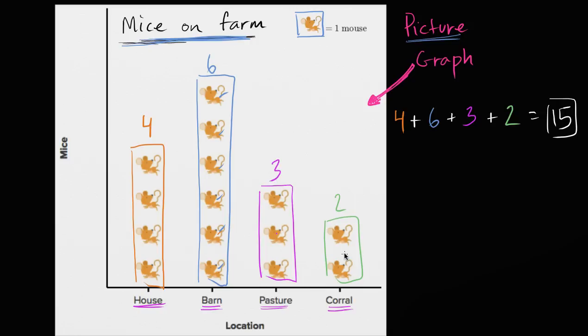They said, how many mice in the whole farm? And if these are all the places where the mice could be, well, it's going to be the four plus six plus three plus two, or fifteen. And we're done.